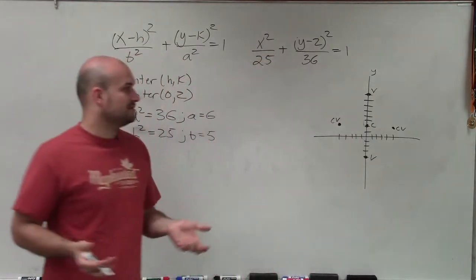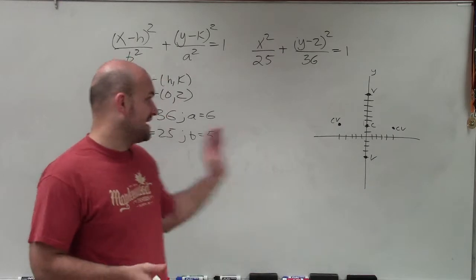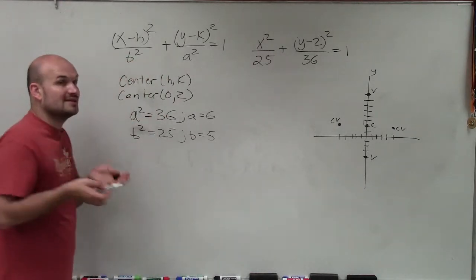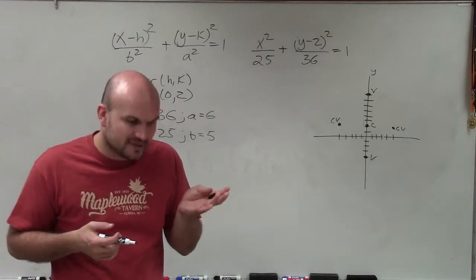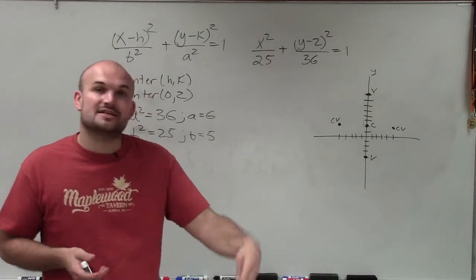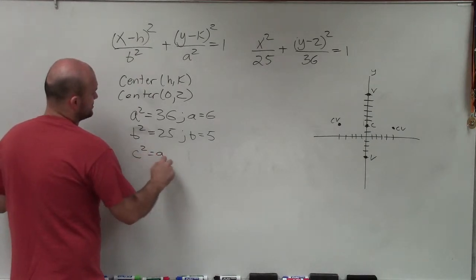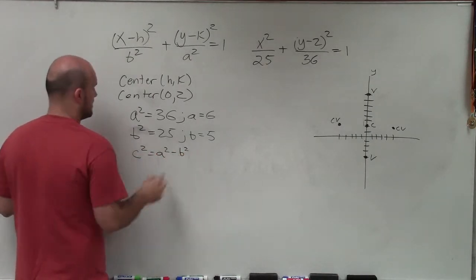OK? So now I've been able to determine the vertices, the co-vertices, and the center. Last thing I need to do is determine what c squared is, because c represents the distance from the center to the foci. So the formula that we have for c squared is c squared equals a squared minus b squared.